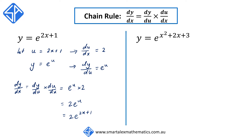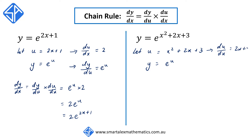For our second example, we've got y is equal to e to the power of x squared plus 2x plus 3. We're going to let u equal to x squared plus 2x plus 3, so y can then be written as e to the u. From here, du/dx is equal to 2x plus 2, and dy/du is equal to e to the u.